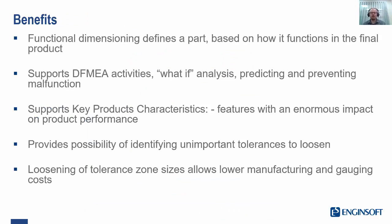So how do we benefit from using functional dimensioning? It defines our part based on how it functions in the final product, which can support DFMEA activities, key product characteristics, and also provides the possibility of identifying tolerances that are not important and aren't involved in the functions of the product — tolerances that we might be able to loosen. Loosening these can allow lower costs associated with manufacturing, gauging, inspection, and various other items, also perhaps scrappage, rework and so forth.